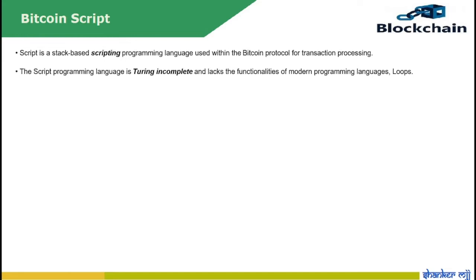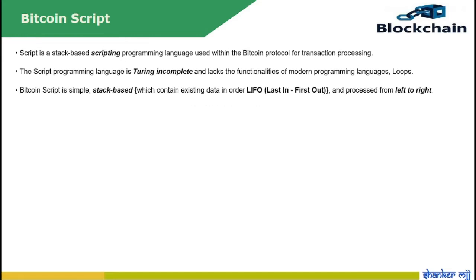So it is not capable of solving any type of problems such as a Turing machine. Bitcoin script is a simple stack-based structure which contains existing data in order using last-in, first-out processing, executing commands from left to right. It is intentionally not Turing complete with no loops, and each instruction in this language is executed one after another consecutively.